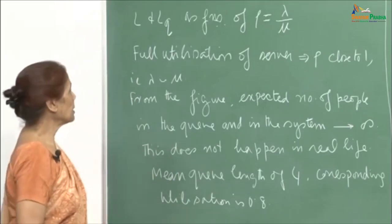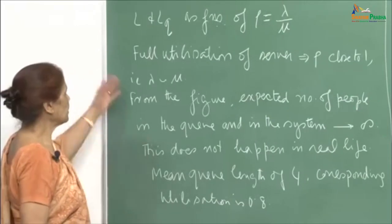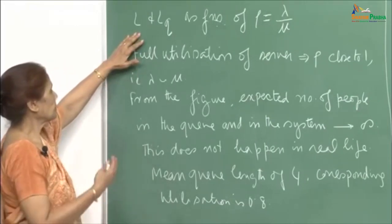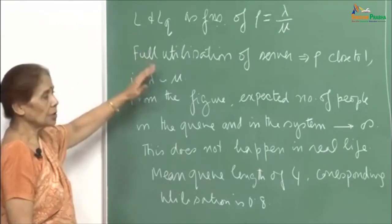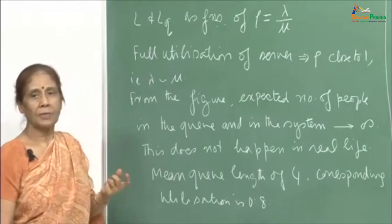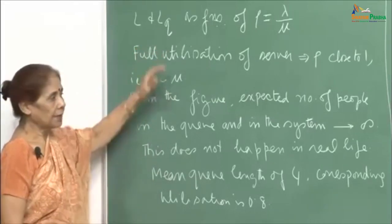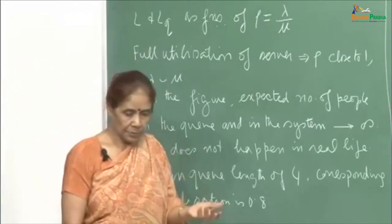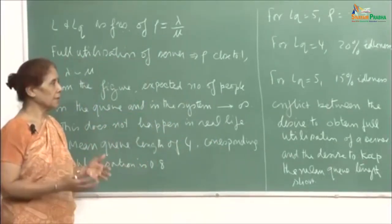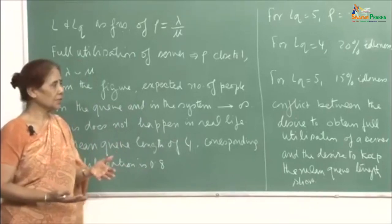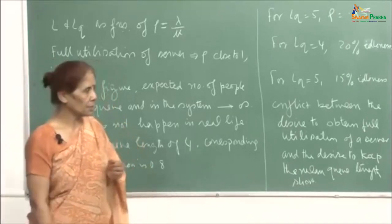I will continue my discussion about the queuing system — the features that are important in determining various aspects of a queuing system. L denoted our average number of people in the system, L-queue was the average number of people in the queue. We also computed the average waiting time a person will spend in the system, which includes waiting in the queue plus service time, and also the waiting time in the queue, which is also important.